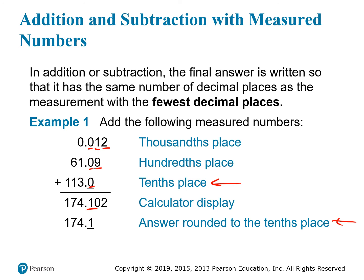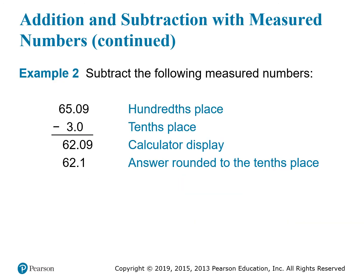Notice that the number that has the fewest decimal places was not the number with the fewest significant figures. The first number has the fewest significant figures, but that's irrelevant when we're adding and subtracting. Here we can see another example with subtraction, and the same idea applies. The second number, 3.0, has only 1 decimal place, while the other number has 2. So our answer is limited to just 1 decimal. That means we have to round 62.09 to the tenths place, and we get 62.1.